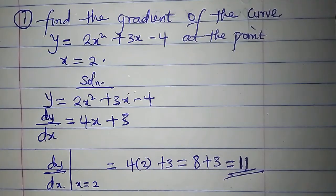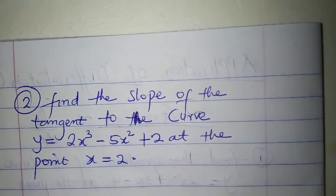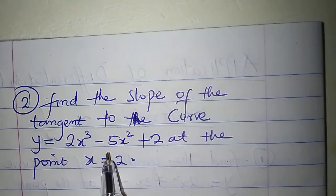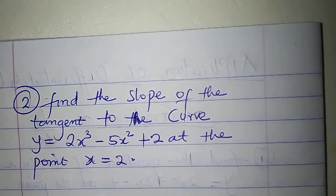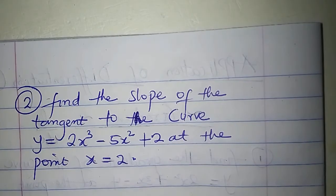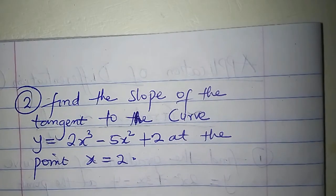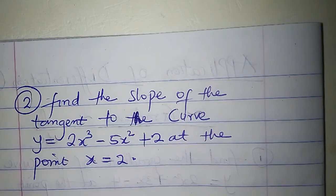What is the slope of the tangent to the curve y = 2x³ - 5x² + 2 at the point x = 2? Take note: if I have a tangent to a curve at a particular point, the gradient of the curve at that point is equal to the gradient of the tangent at that same point of contact.